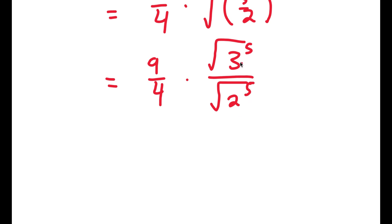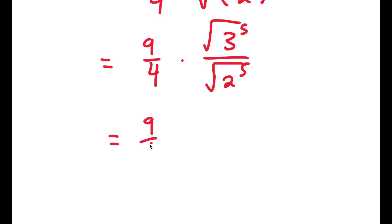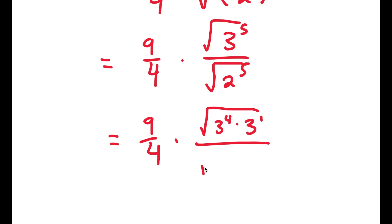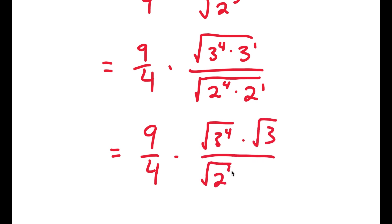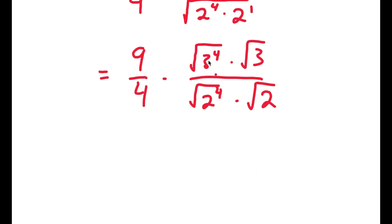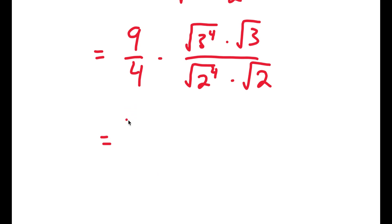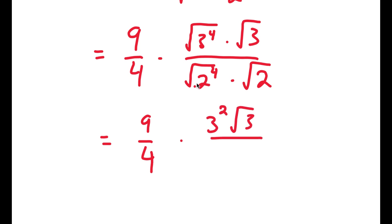The square root of 3 to the power of 5, I can rewrite that as the square root of 3 to the power of 4 times 3 to the power of 1. And the square root of 2 to the power of 5, I'm going to do the same thing — rewrite that as the square root of 2 to the power of 4 times 2 to the power of 1. Now we can divide this into the square root of 3 to the power of 4 times the square root of 3 over the square root of 2 to the power of 4 times the square root of 2. The square root of 3 to the power of 4 equals 3 squared, and the square root of 2 to the power of 4 equals 2 squared.